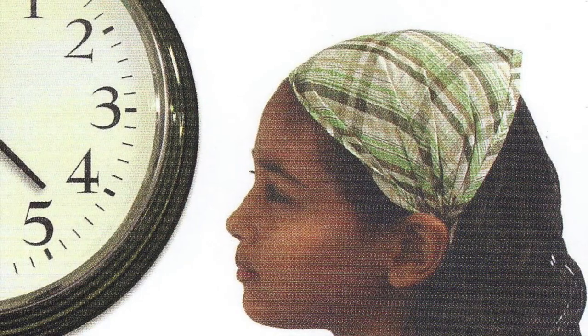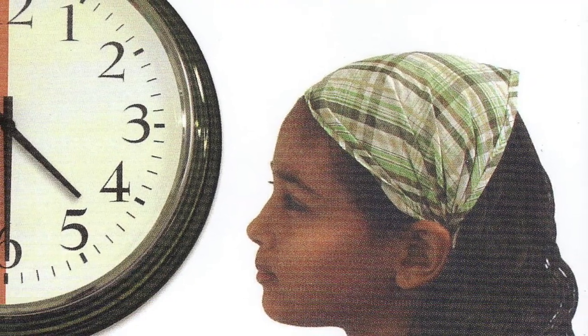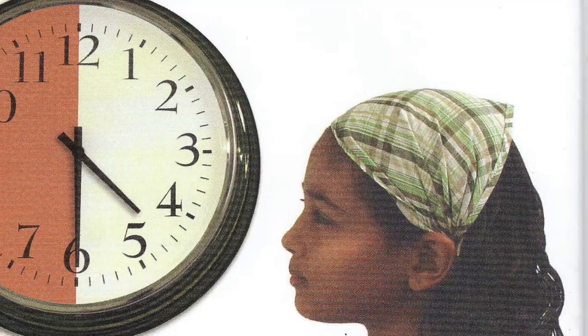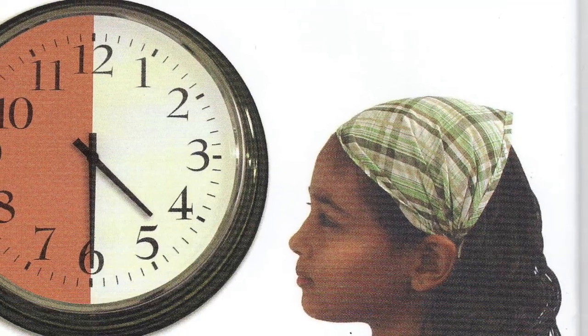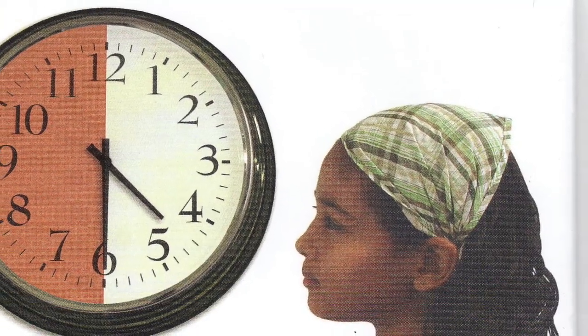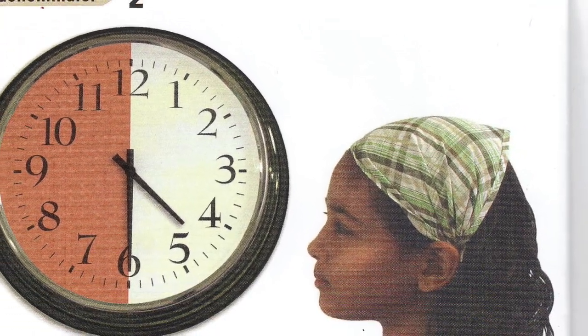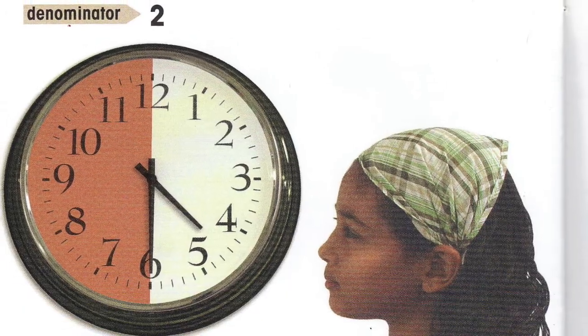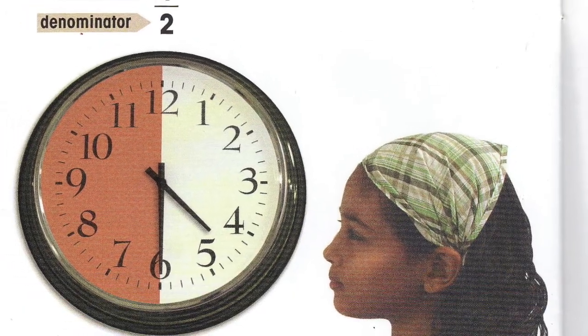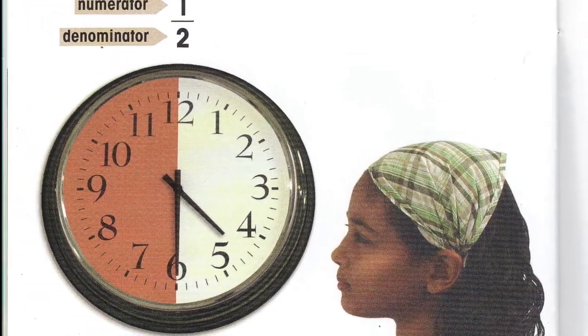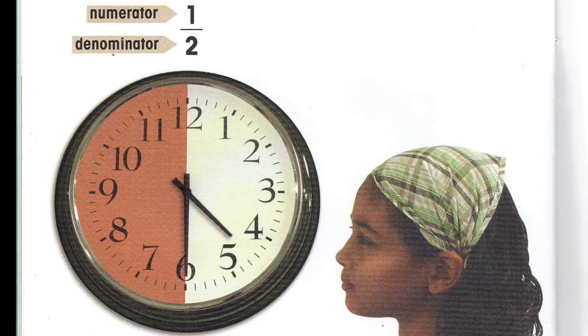So remember: a fraction is a part of a set or part of a whole. It's represented by two numbers. The number at the top is called the numerator — it represents the part. And the number on the bottom is the denominator — it represents the whole.